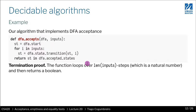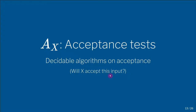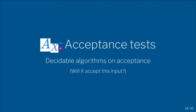This is an example of a decidable algorithm. We talked about acceptance tests, which we will write with the notation A of x. The 'A' stands for acceptance and 'x' is what we are accepting on. Acceptance tests are decidable algorithms on acceptance — will x accept this input, where x could be a DFA, context-free grammar, PDA, or regular expression? The basic question is: is acceptance decidable for each of these?